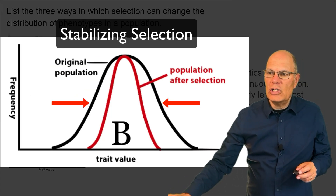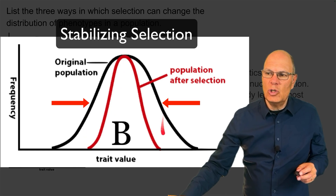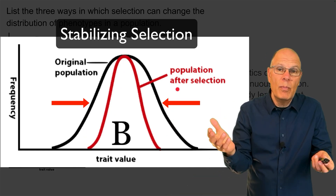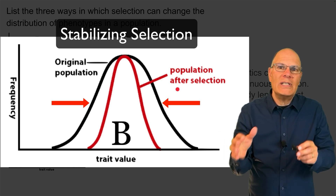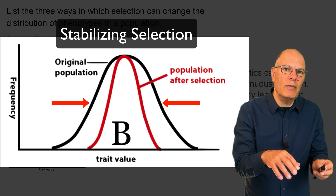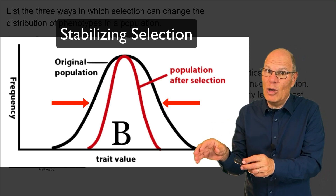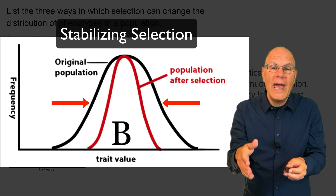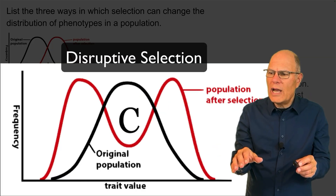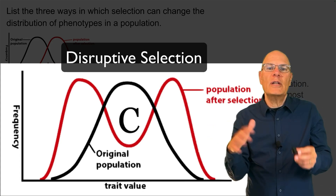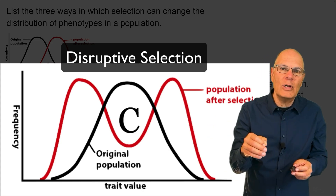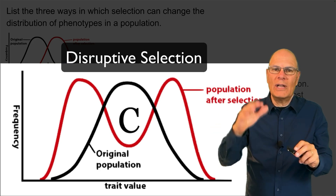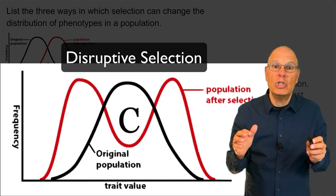In stabilizing selection, you are selecting against the two extremes. An example is birth weight in babies: babies that are too small have lower survival, babies that are too big have lower survival, and the babies who survive most are those of average size. In disruptive selection, if the average phenotype is maladaptive, there'd be selection for both extremes, effectively splitting the population into two.